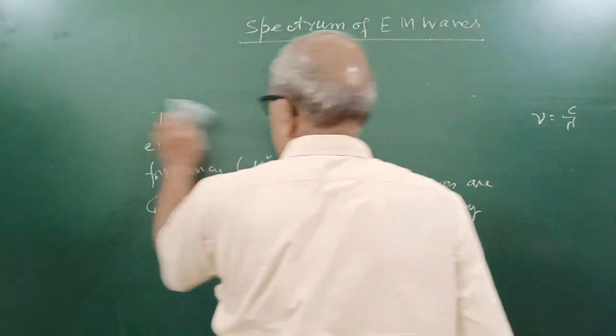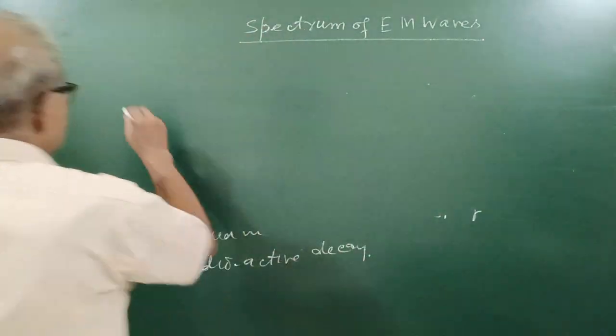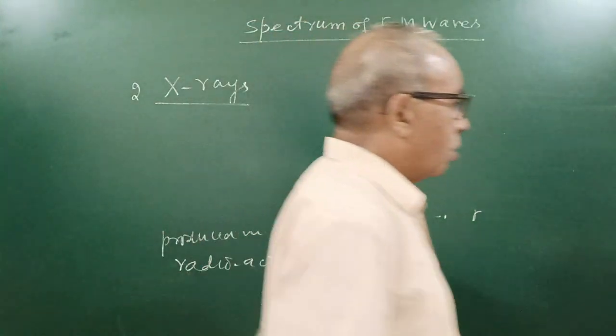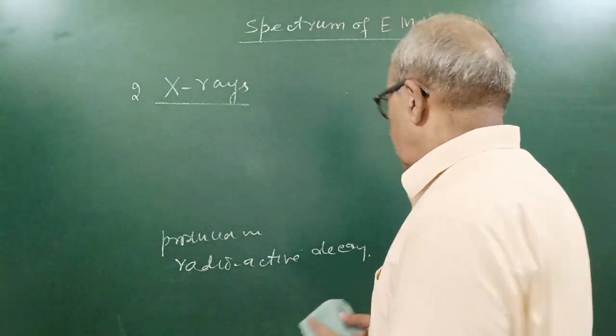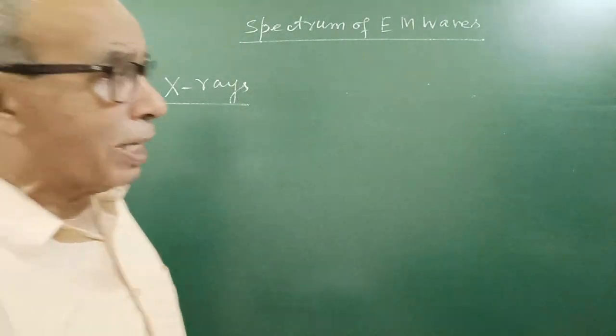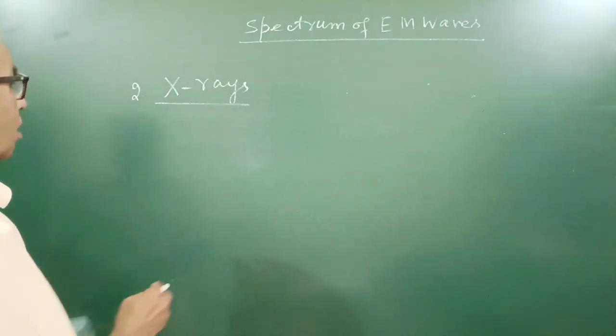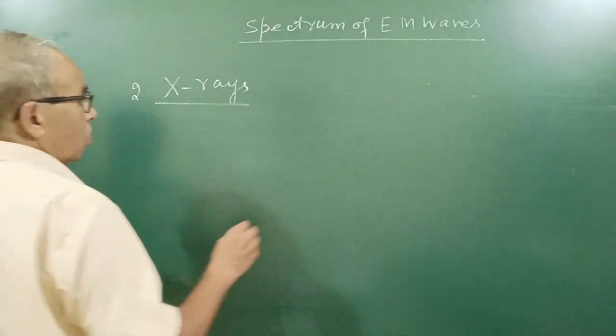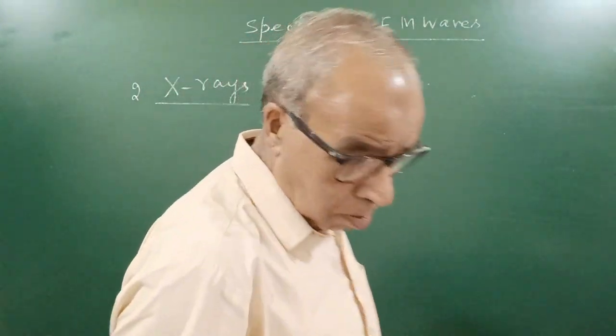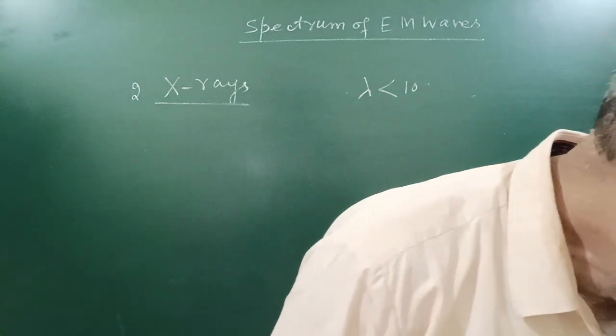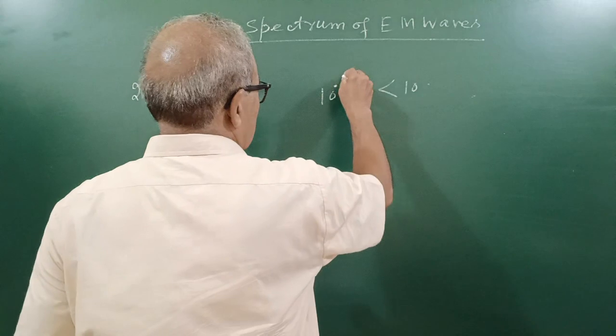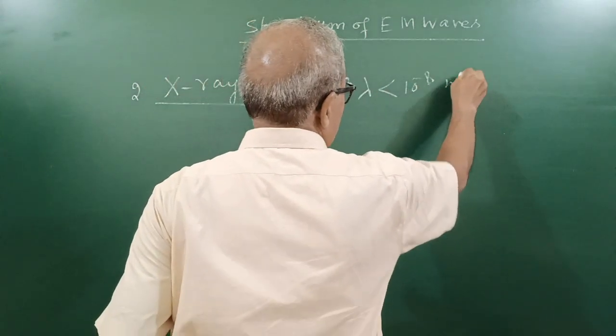Now come to X-rays, number two. Why the name is X-rays? These were discovered by W.R. Röntgen. At that time he named them X. X-ray wavelength lambda less than 10 to power minus 8, from 10 to the power minus 13 to 10 to the power minus 8 meter.